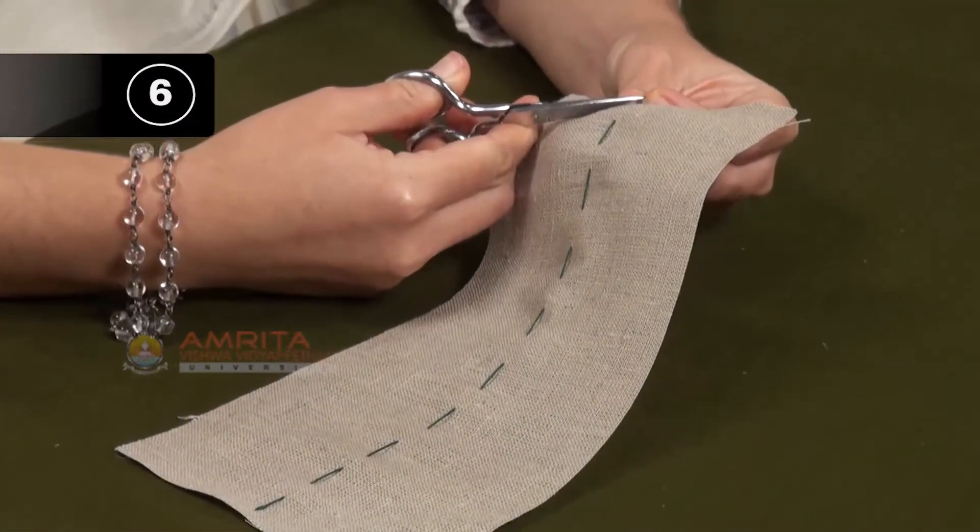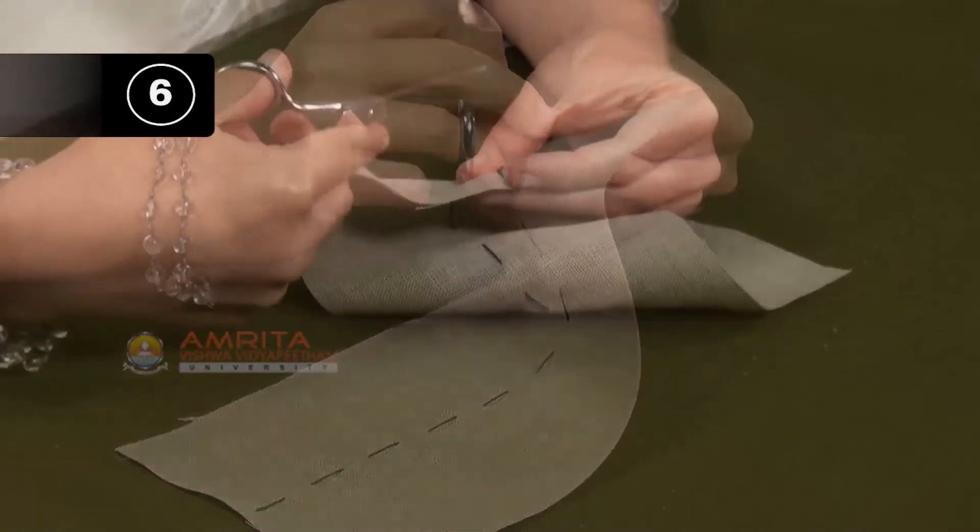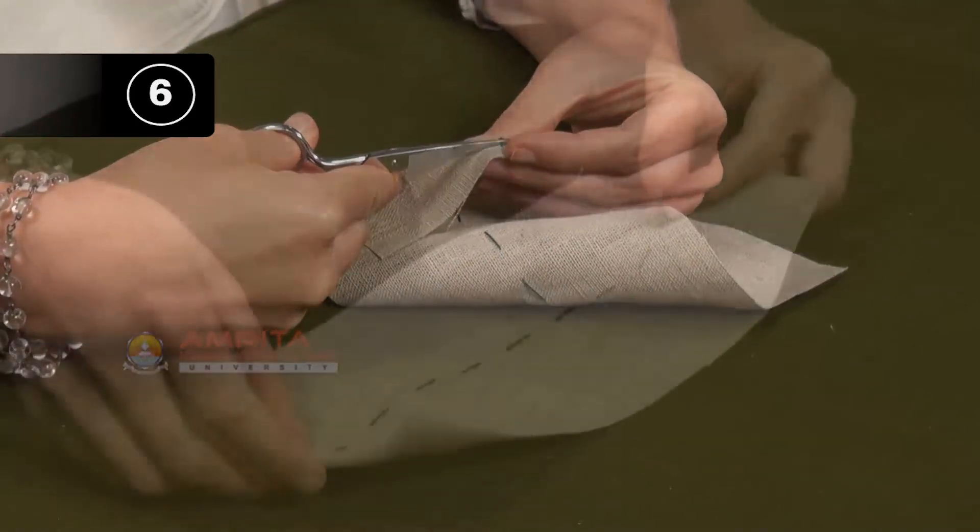Step 6: To release the tacking stitches, just cut off the knots on both ends and pull out the thread.